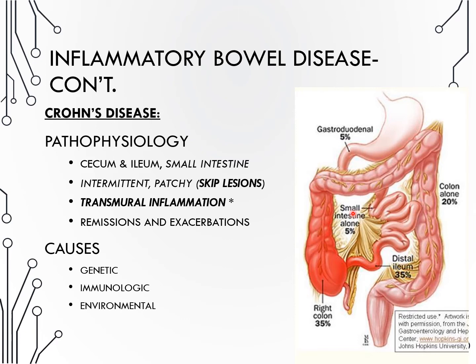Unlike UC where ulcerations cause abscesses, Crohn's disease leads to multiple fistulas — small, unnatural connections between parts of the colon or bladder, vagina, or skin. Strictures caused by scar tissue often result in obstructions that can only be fixed by surgery. If you know anything about bowel surgery, releasing or cutting scar tissue only makes more scar tissue and more strictures — a vicious cycle. We always hope to avoid surgery, but sometimes these strictures and obstructions are life-threatening.